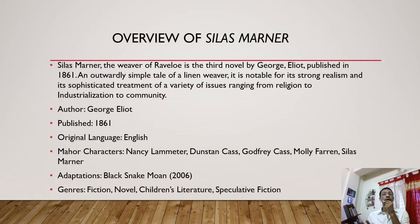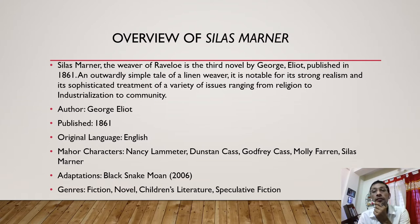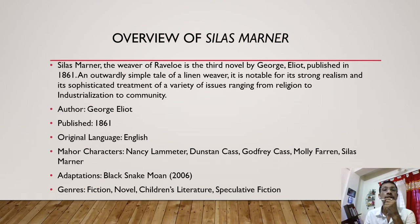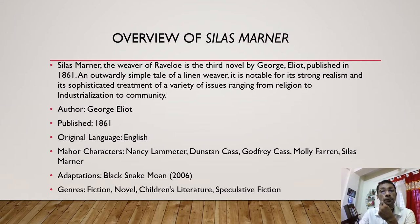Let us have a look at the overview of Silas Marner. Silas Marner: The Weaver of Raveloe is the third novel by George Eliot, published in 1861. An outwardly simple tale of a linen weaver, it is notable for its strong realism and sophisticated treatment of a variety of issues ranging from religion to industrialization to economy and community. The author's real name is Mary Anne Evans. Major characters include Nancy Lameter, Dunstan Cass, Godfrey Cass, Molly Farren, and Silas Marner. The novel was adapted as Black Snake Moan in 2006. The genre is fiction — sometimes treated as children's literature and speculative fiction.